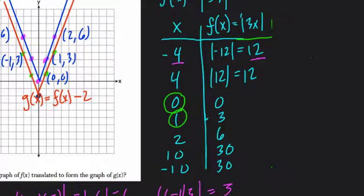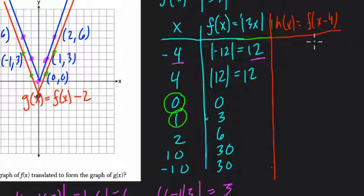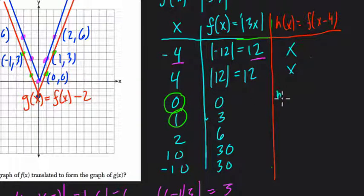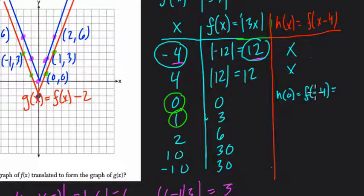Watch what happens here. The input is zero, so we want H(0). It equals F(0 minus 4), which is F(negative four). We know that when we plugged in negative four to F(x), the output was twelve. So H(0) equals what F(negative four) equals, which is twelve. Our first point is zero comma twelve — unfortunately, there isn't enough space to graph that.